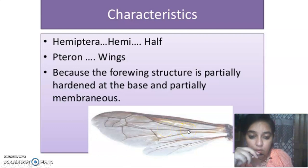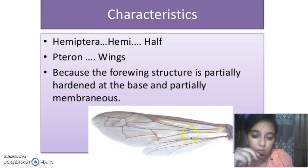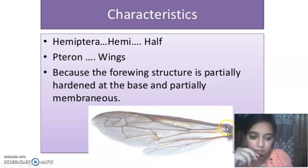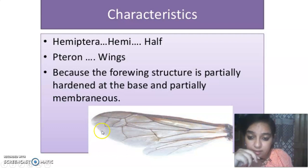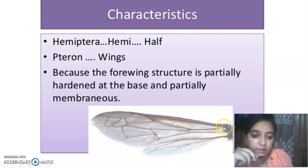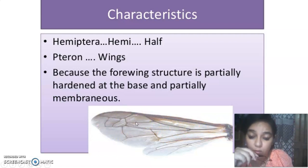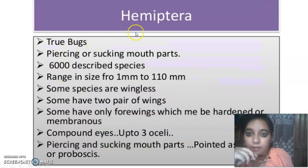Before moving to the next slide about the hardened and membranous parts, let me explain wing anatomy. If we draw a wing, the thorax is where the wing is attached. The portion near the thorax is the base of the wing and the tip is always known as the apex. In Hemiptera, the base portion of the forewing is hardened and the apical portion is membranous.